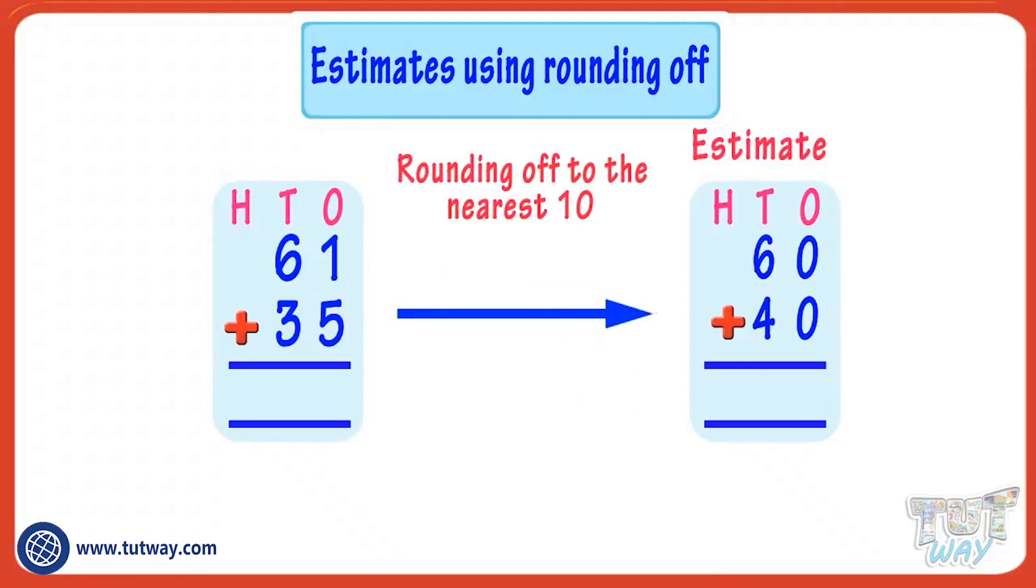Adding the rounded off figures 60 and 40, we will get 100. So our estimate for adding 61 and 35 is 100.